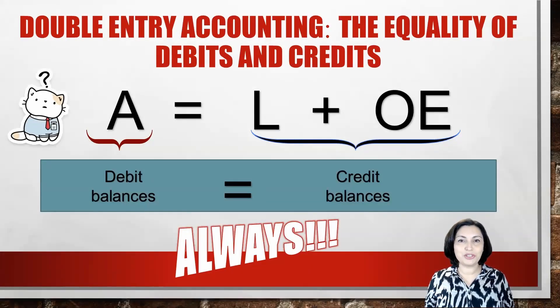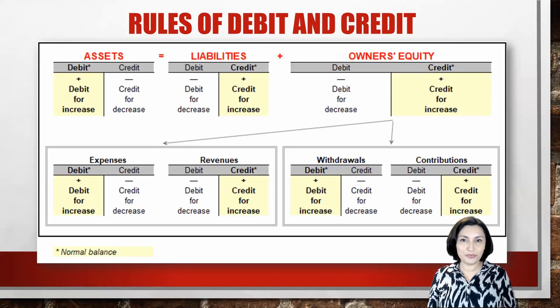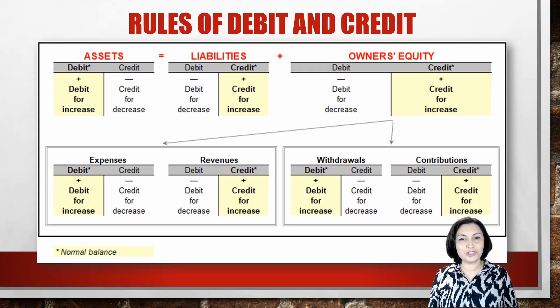Instead of using the terms increase and decrease, we use the terms debit and credit. It is important to remember whether we are talking about an asset, liability, or equity account for the meaning of a debit or credit. It may take some time to get used to the terms debit and credit, but with some practice you can easily master this concept. Accountants use the double entry accounting system, which means that all transactions will have equal dollar amounts of debits and credits.